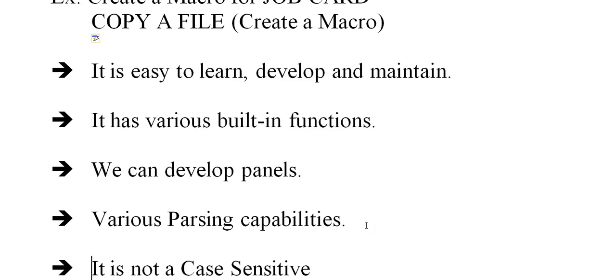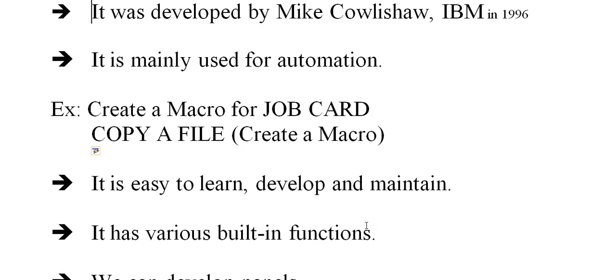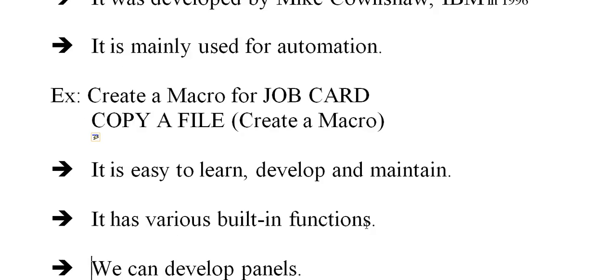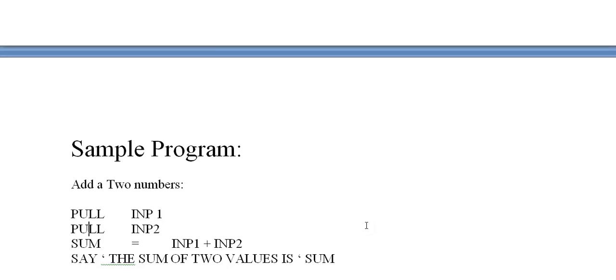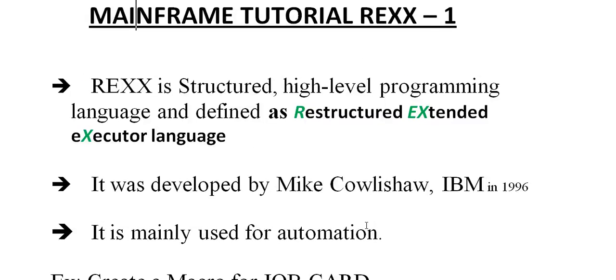These are the key features for this introduction to REXX. I will only cover a few points here; when we go into the details I will cover how to declare variables, the structure, the method we need to follow, and how to run these macros. In this introduction video I would like to show you a sample program to add two numbers: PULL input1, PULL input2, sum = input1 + input2, SAY 'the sum of two values is' sum. That's it — a simple REXX program. In my next video I will be coming up with more topics, techniques, and macros for REXX automation programming.